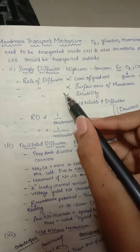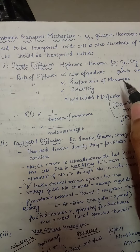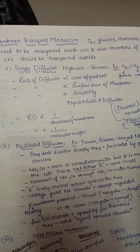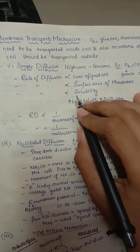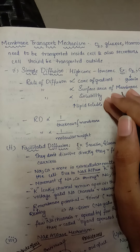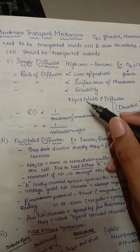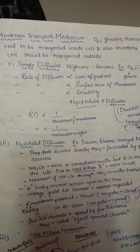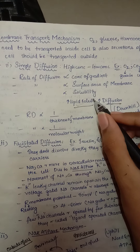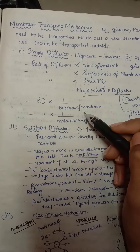The rate of diffusion is also directly proportional to the surface area of the membrane — if the surface area is high, diffusion is high; if it is low, diffusion is low. Solubility also matters: substances that are easily soluble undergo more diffusion. Increased lipid-soluble substances have more diffusion because our cell membrane is made up of a lipid bilayer, so lipid-soluble substances pass more easily.